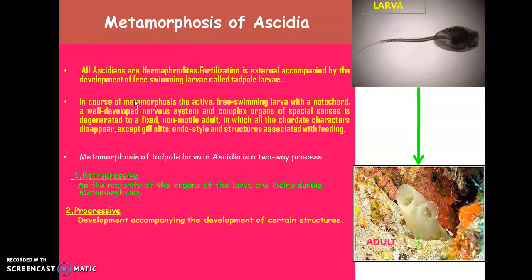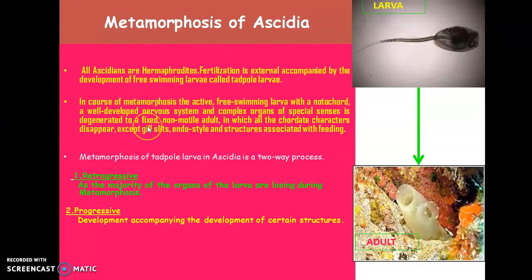So what happens during the course of metamorphosis? In the course of metamorphosis, the active free-swimming larva, which is provided with most of the advanced characters like notochord, heavy tail-perinal system, and the complex elements of special senses, will be degenerating. So this is simply the process which is taking place in metamorphosis. After metamorphosis, this free-swimming larva is getting converted into a fixed non-motile adult.